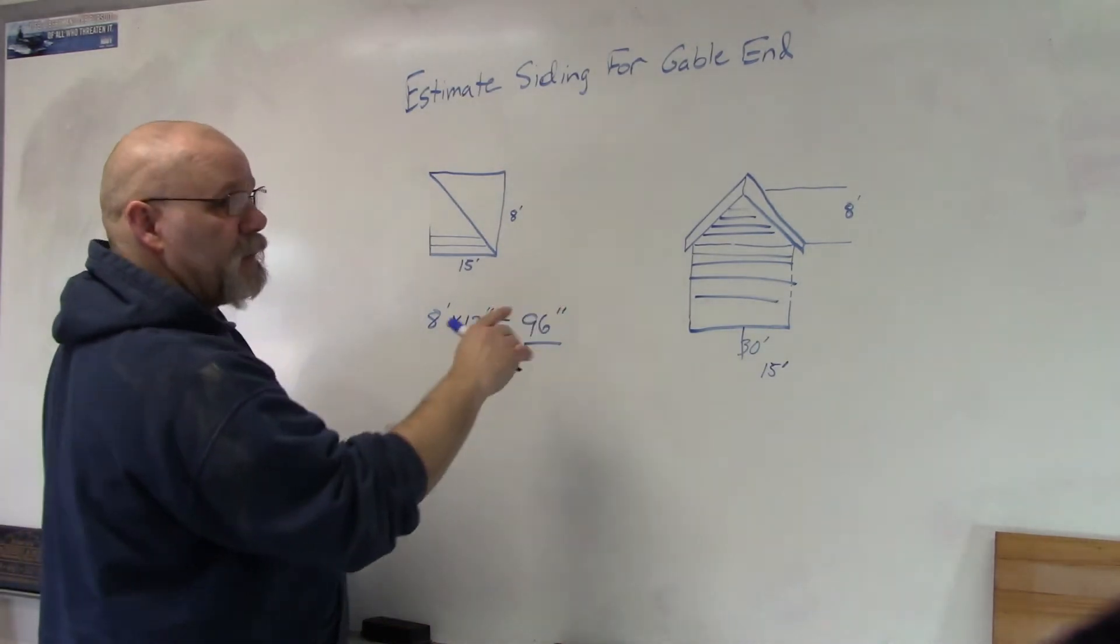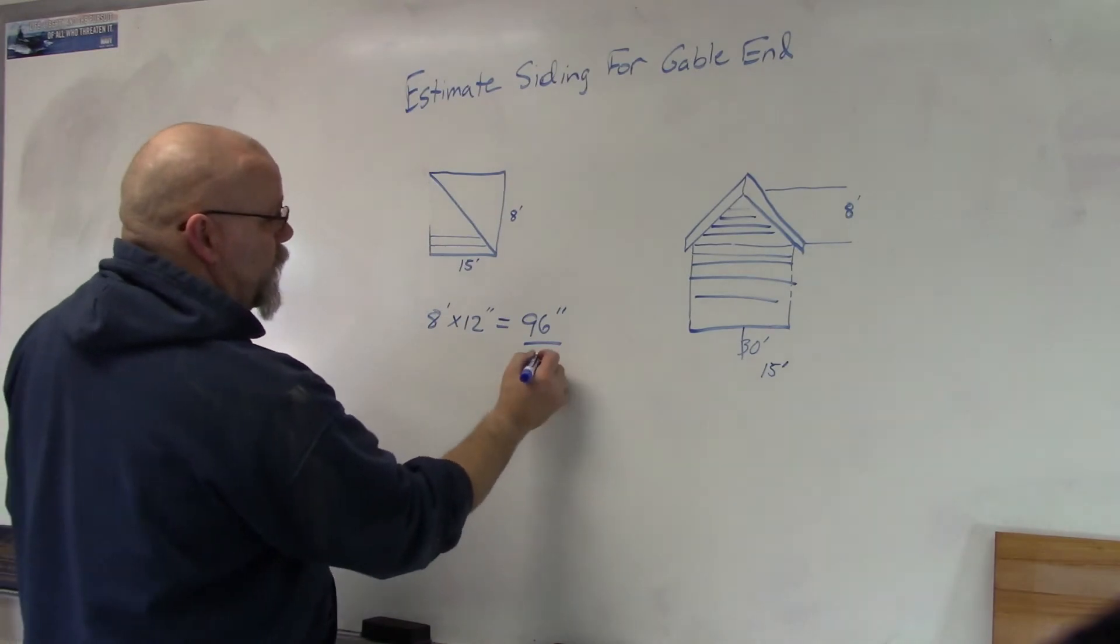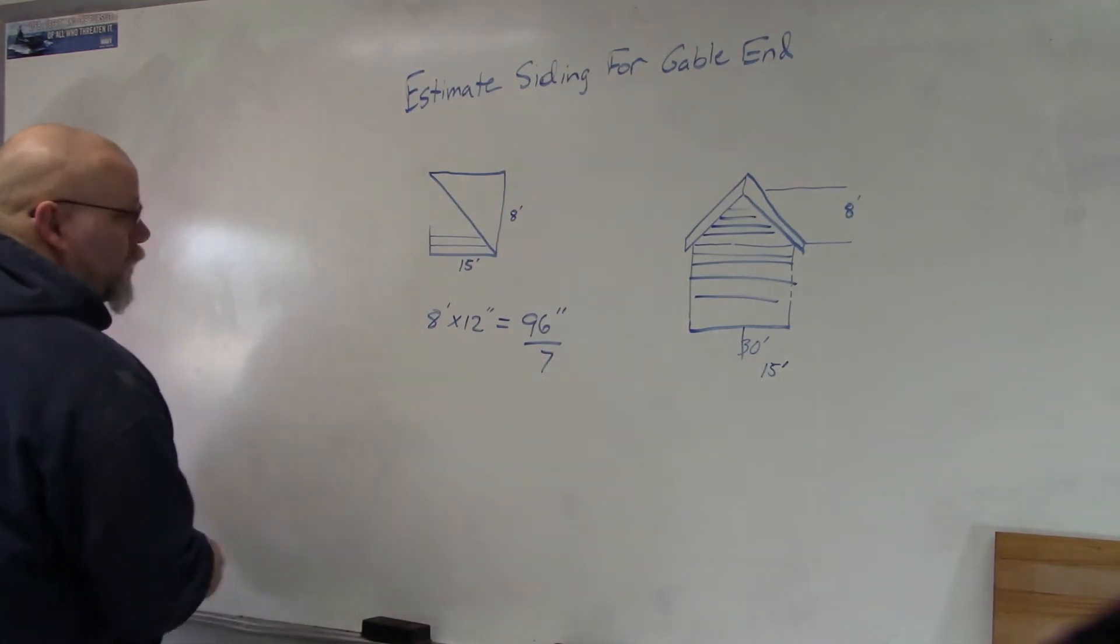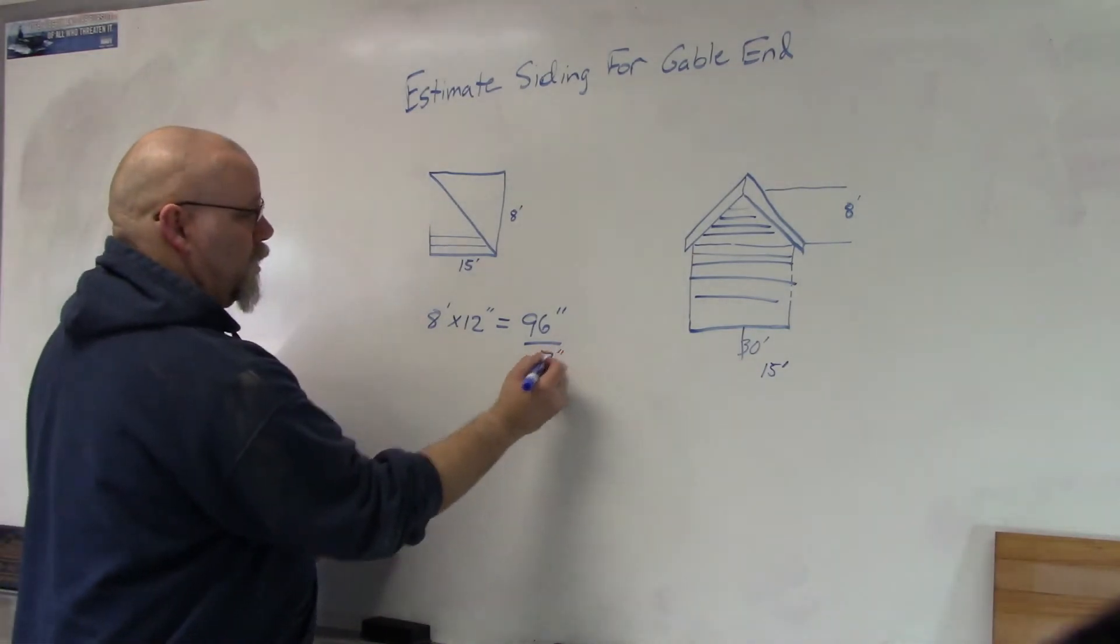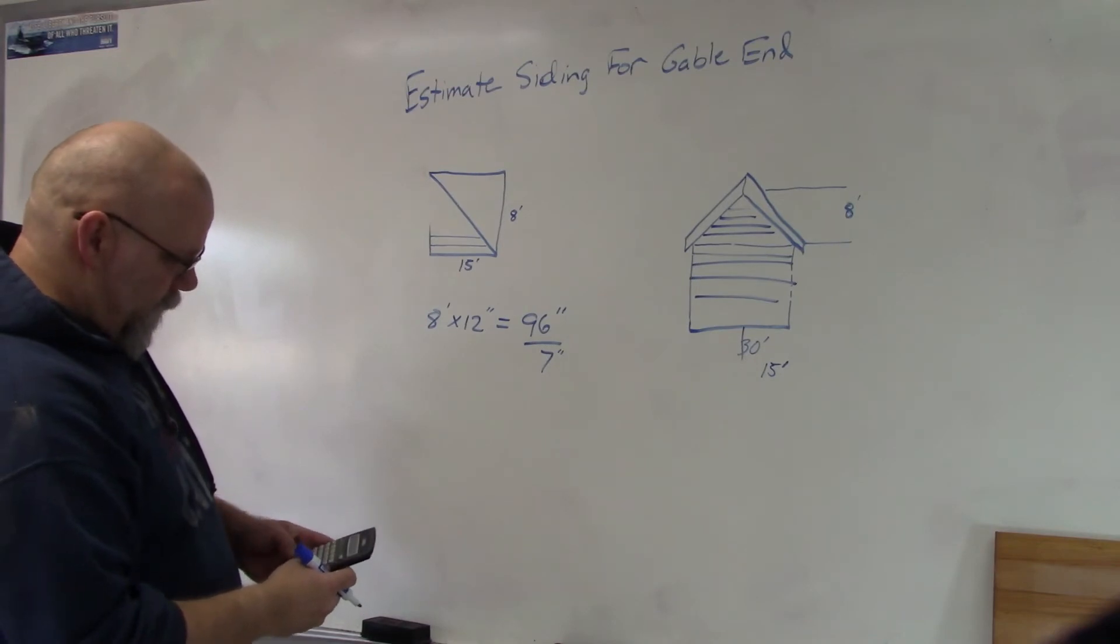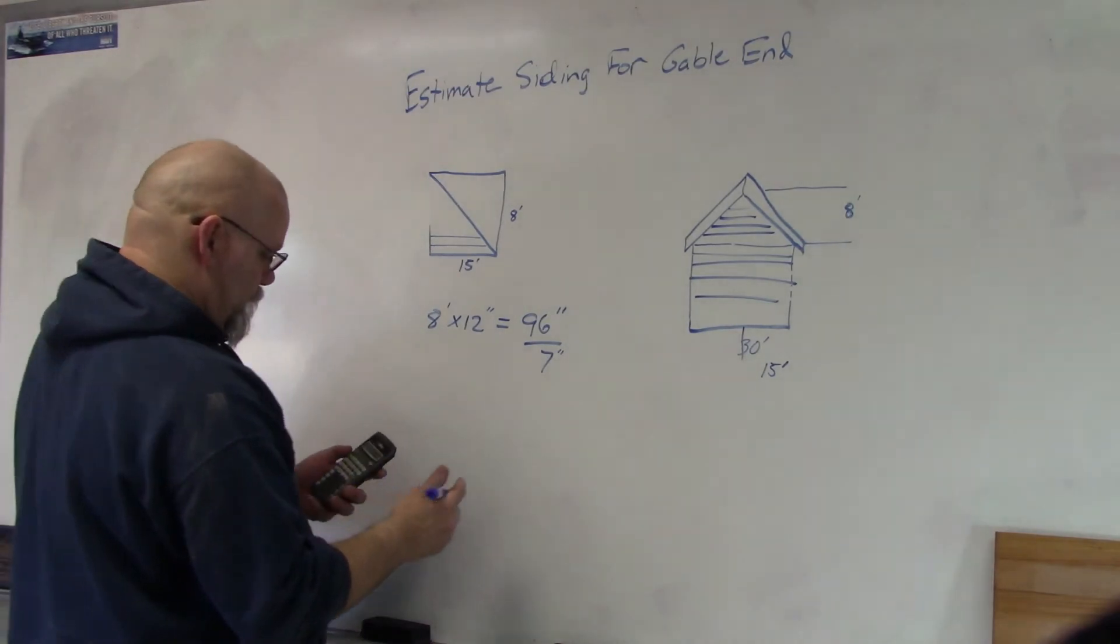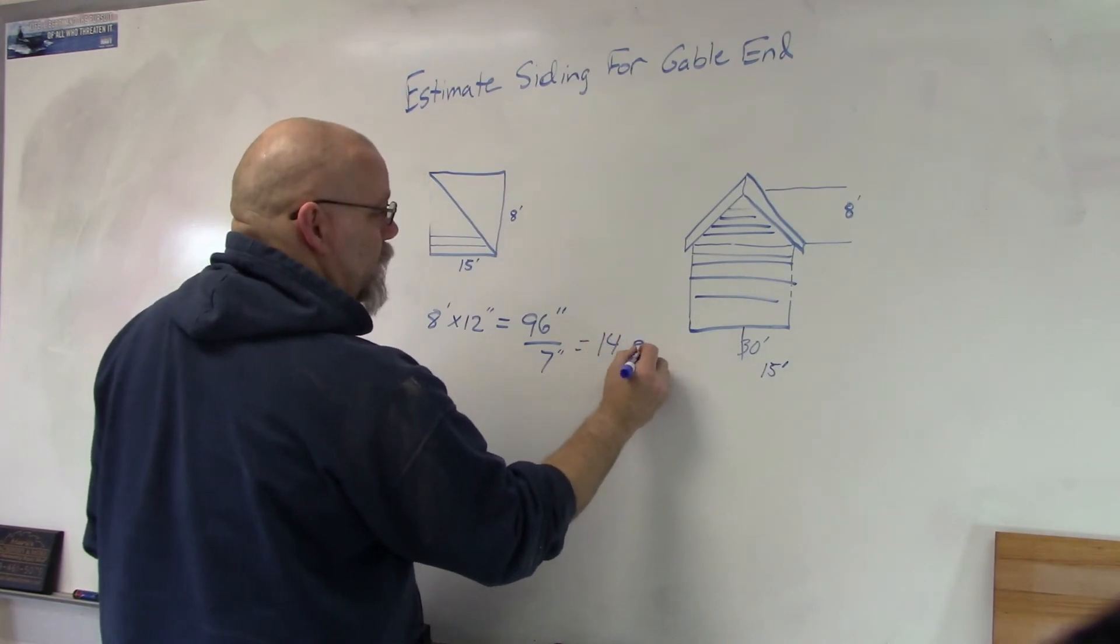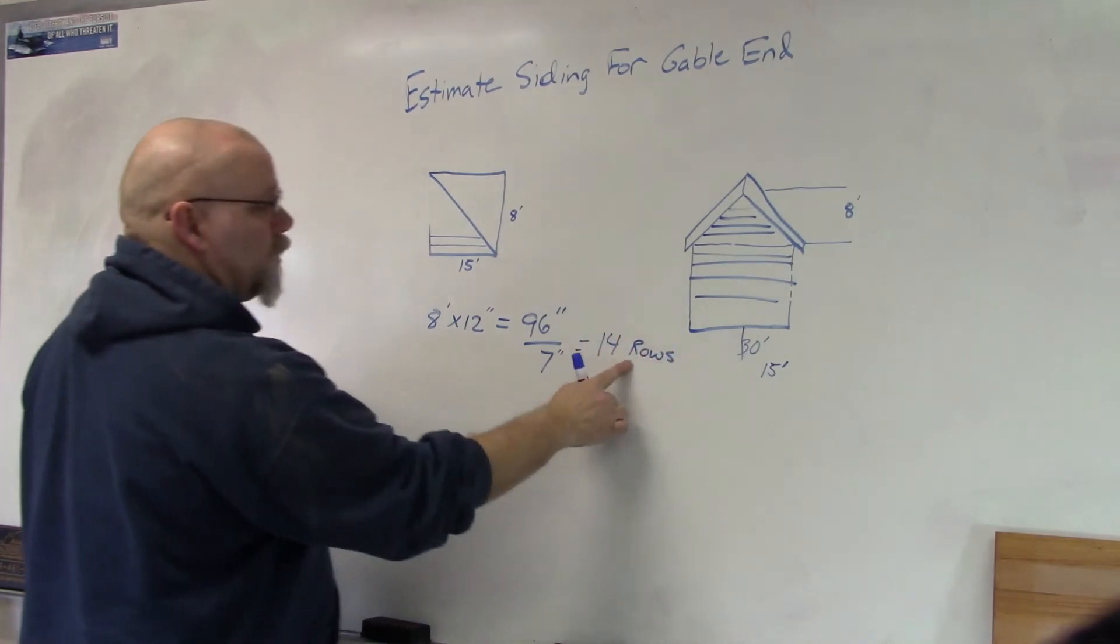So let's say the exposure is 7 inches. So I'm going to take 96 divided by 7, and that gives me 13.71, or rounded up, 14 rows.